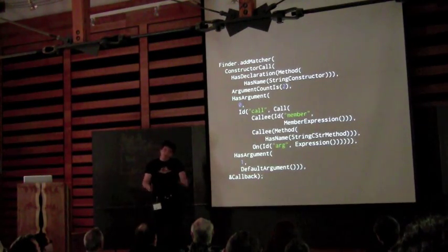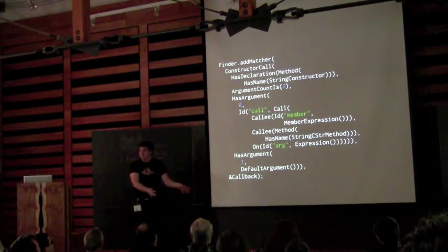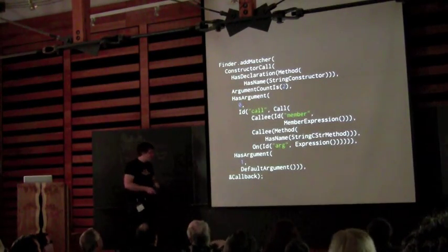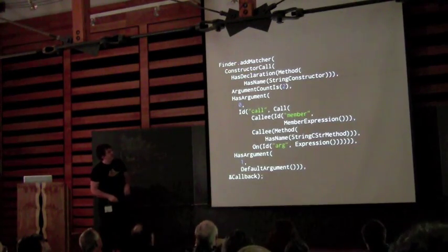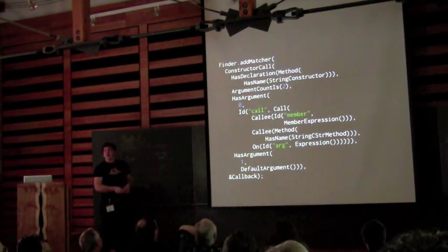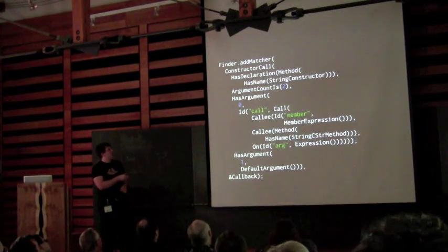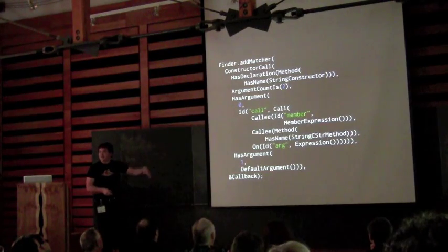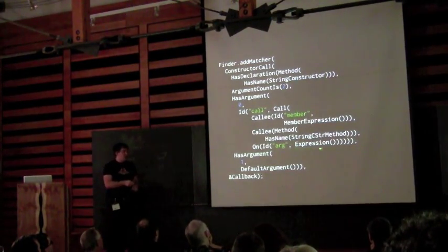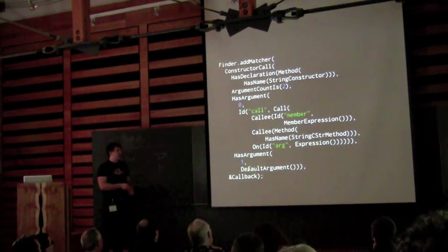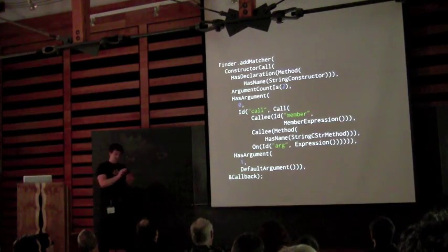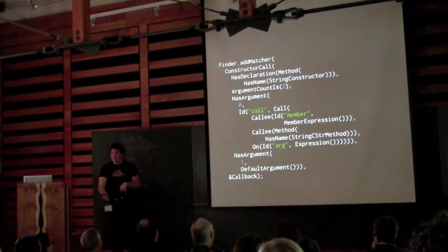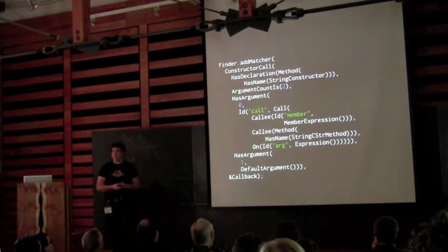We built a tool to detect all of this and rewrite it to just pass the string object through. This found thousands of instances of this pattern in our codebase. We ran it over Clang and LLVM's code — a relatively small project — and it found about 50 instances just there alone. Humans are bad at spotting this because it works. The matcher goes through and says: find a constructor call — a string constructor, the two-argument form — where the first argument is a call to `c_str`, and the second argument is the default argument (the user didn't write it). We only fire when the default argument is used, because it's not valid to replace cases where someone actually passes an allocator.